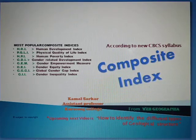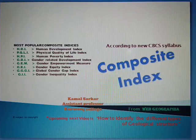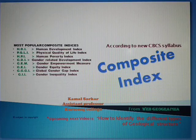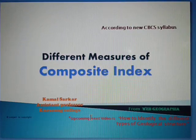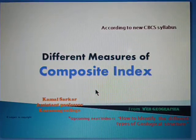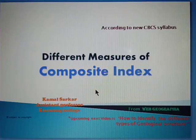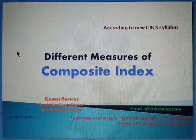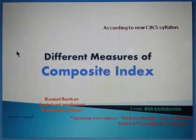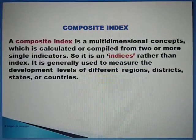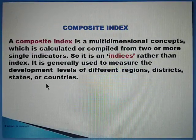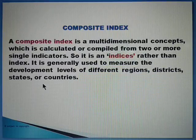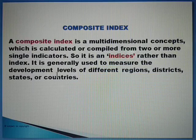Hello dear friends, students and viewers. Today in this video I am showing you what is composite index, what are the different types of composite index, how it is calculated and how to interpret and draw it. Before going to discuss the composite index, we should know what 'composite' means. Composite means it is made up of several elements or parts. When an index is calculated with the help of some other indices, that is actually a composite index. It is a multi-dimensional concept, calculated from two or more single indicators — so it is better to say 'indices' rather than 'index.' It is generally used to measure the level of development of different regions.